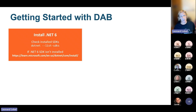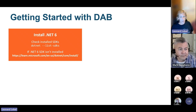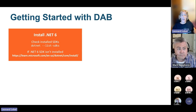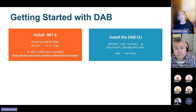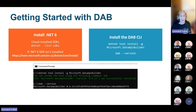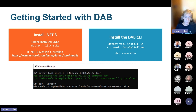How do you get started? It's really easy. Most of us have .NET 6 already — we're on seven, eight is coming — but just make sure you list the SDKs. If you don't have it, hit this link to download and install .NET 6. Then install the Data API Builder CLI with this .NET tool install command. We're showing version 0.6, currently actually we're on 0.7, and hopefully we'll see general availability in the near future.